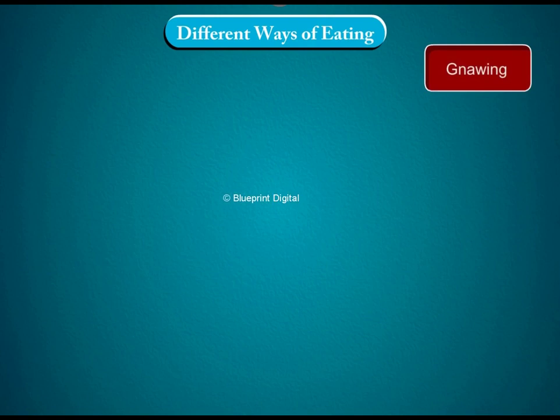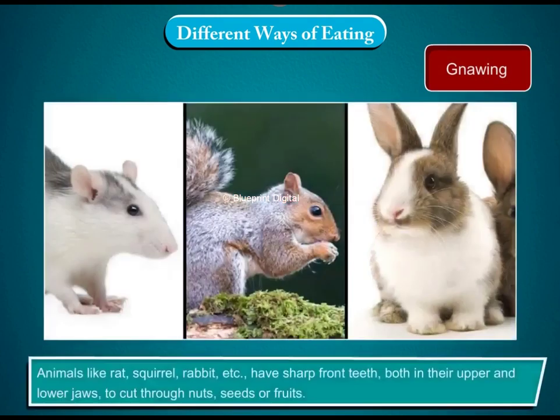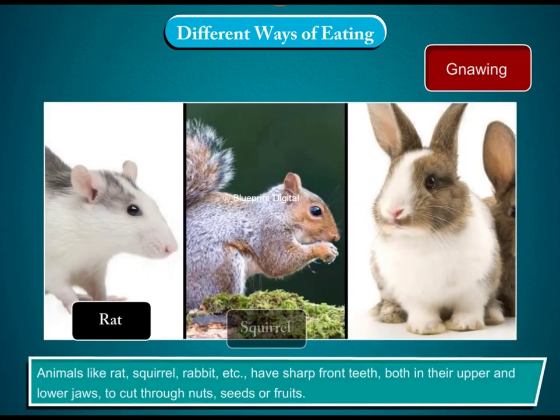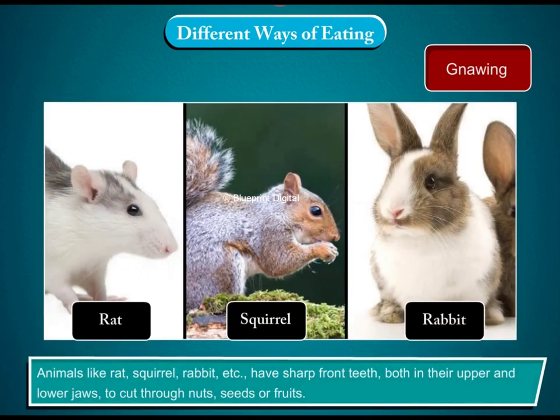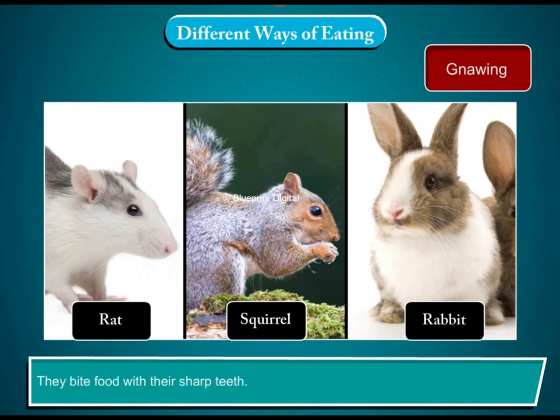Gnawing. Animals like rat, squirrel, rabbit etc. have sharp front teeth both in their upper and lower jaws to cut through nuts, seeds or fruits. They bite food with their sharp teeth.